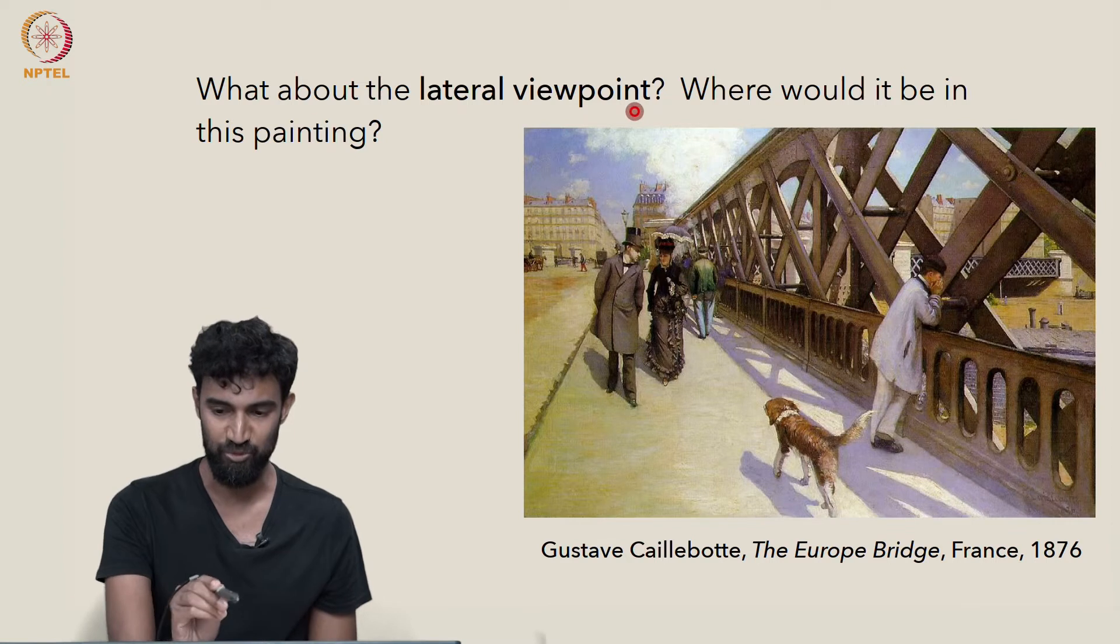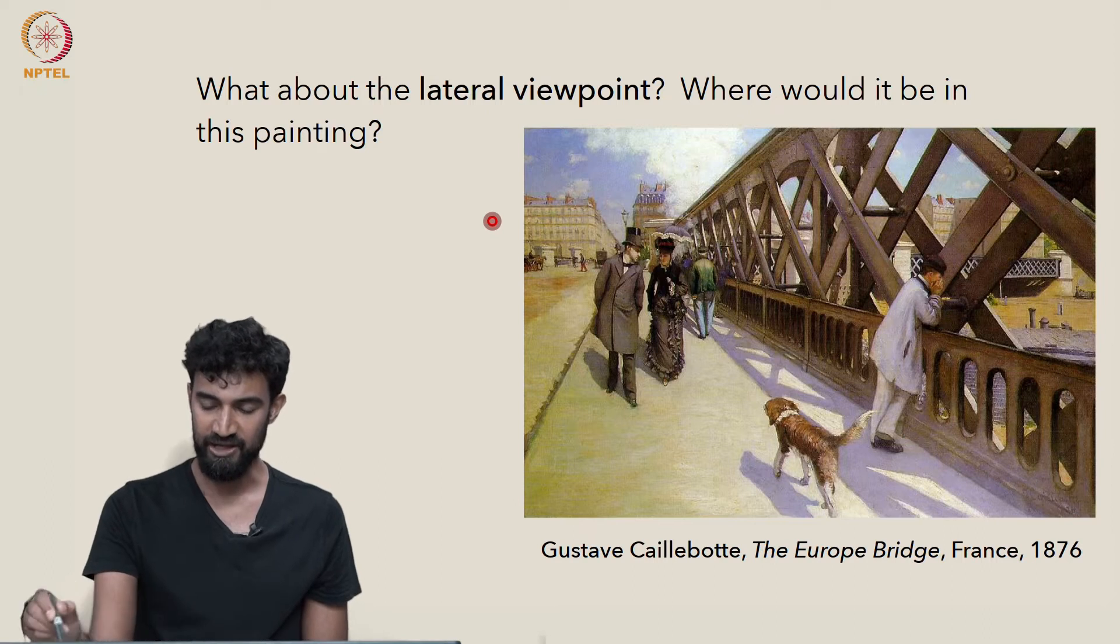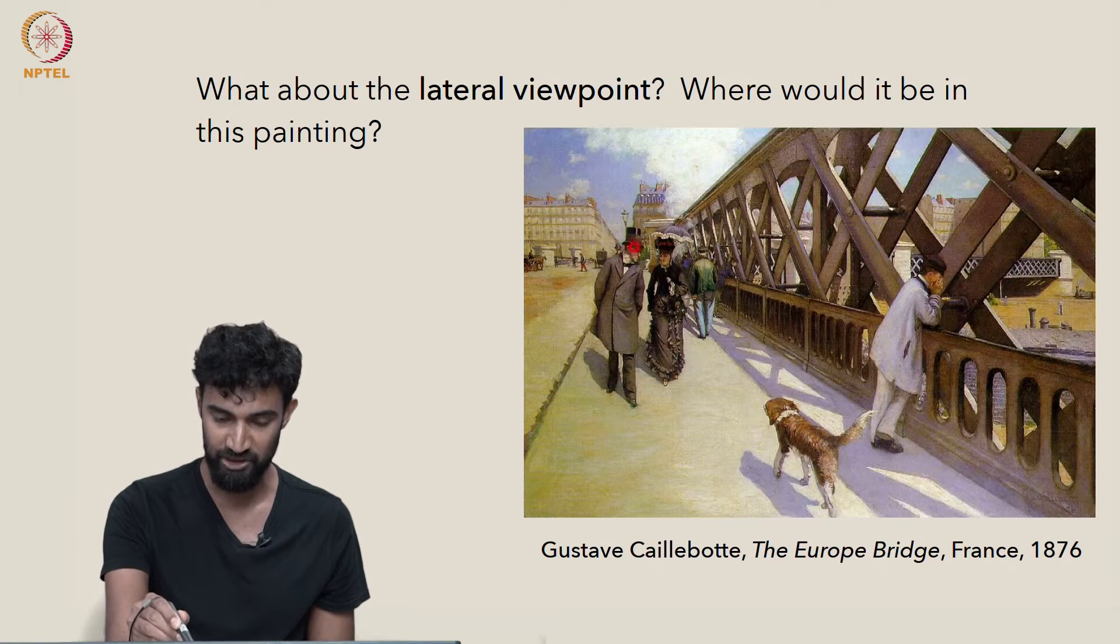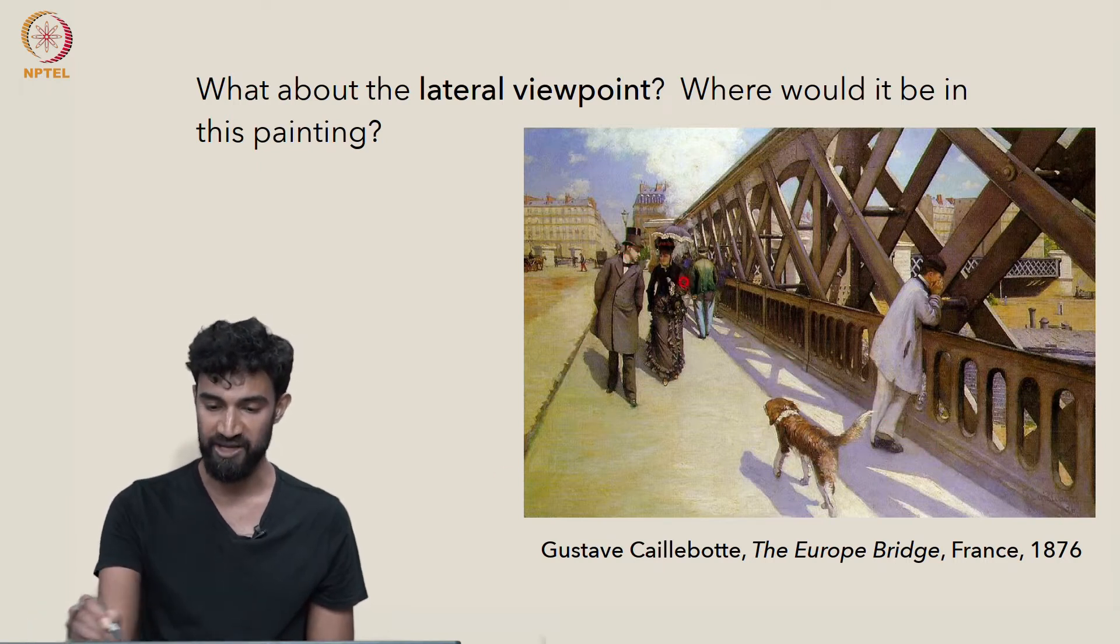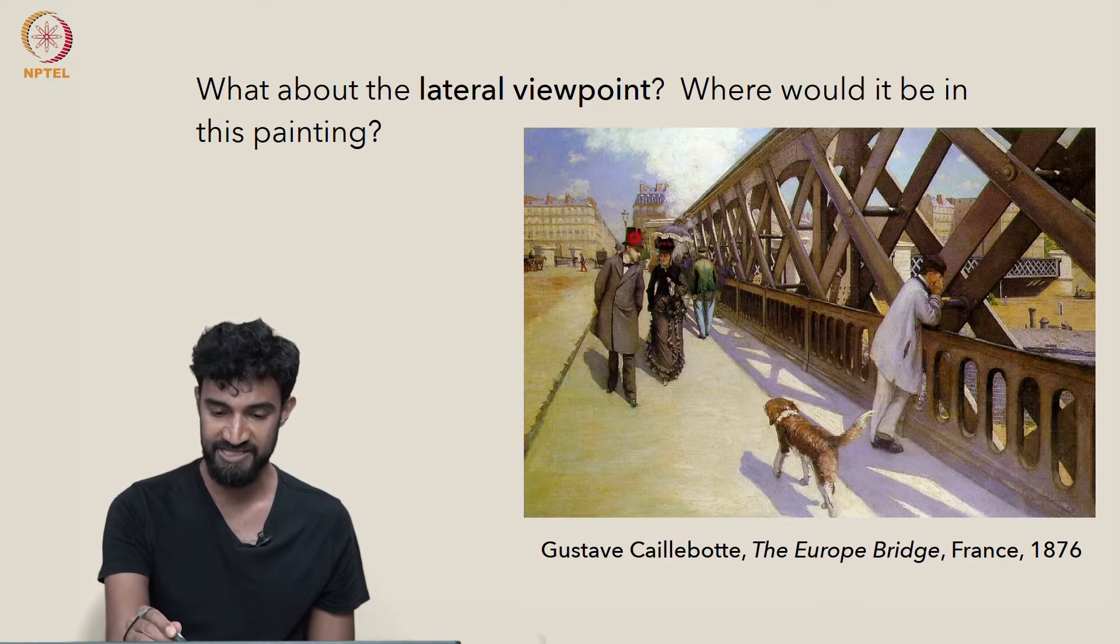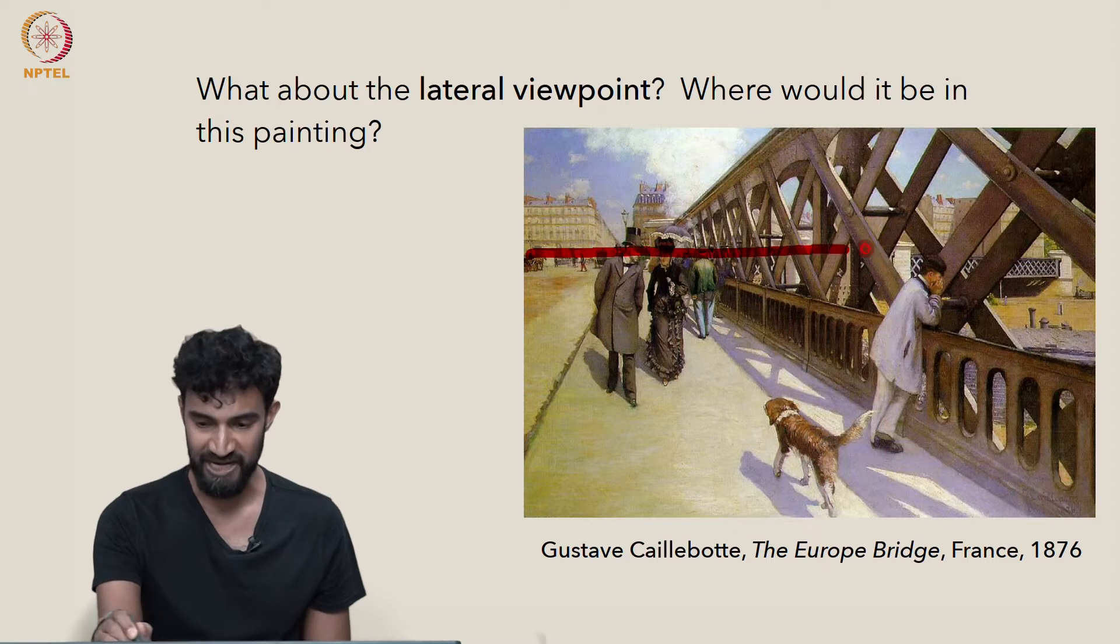What about the lateral viewpoint? Where would it be in this painting, for example? So this painting we've already seen. The lateral viewpoint, or rather the vanishing point is somewhere here. Many objects are oriented in one point perspective in this image. And as a result, we have this nice clear vanishing point.